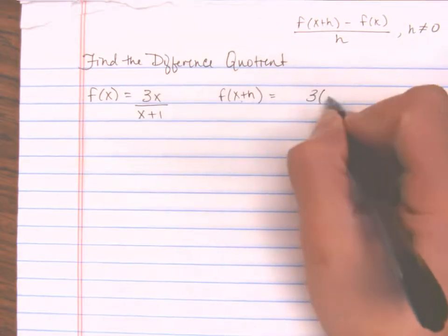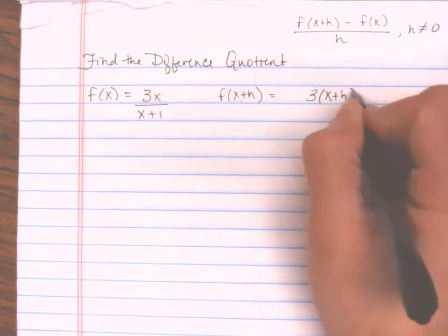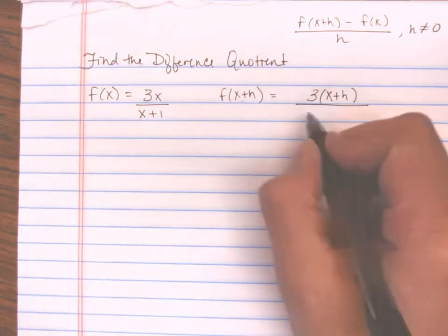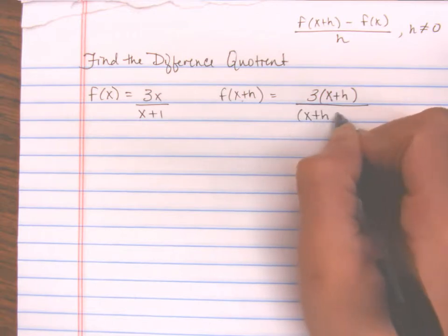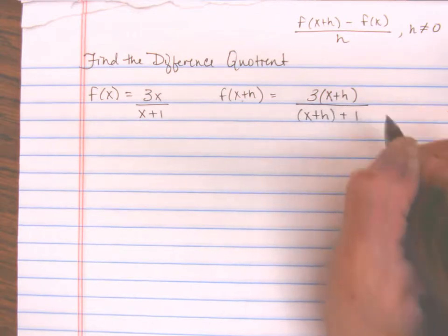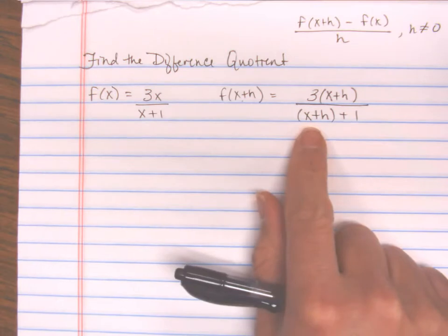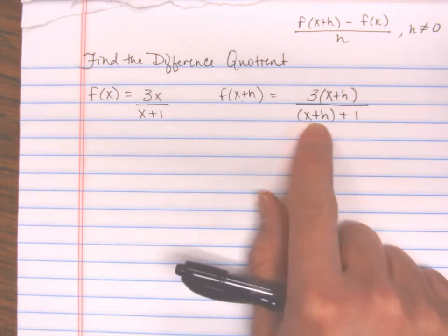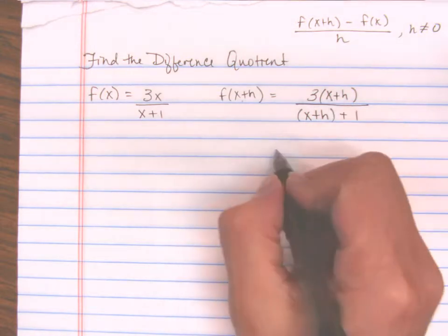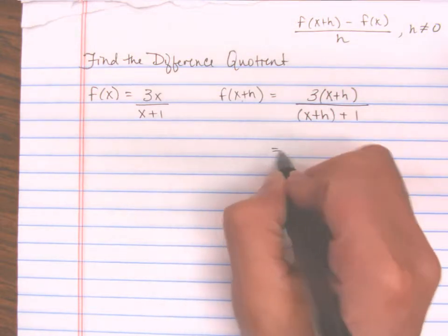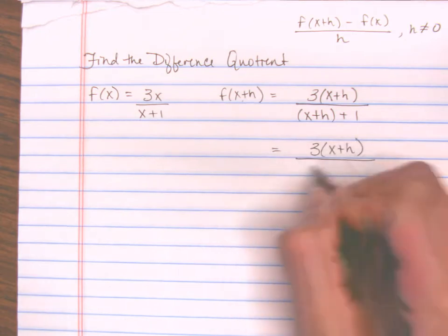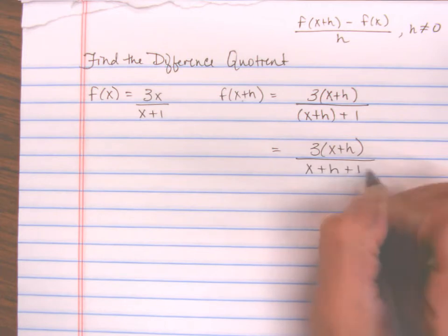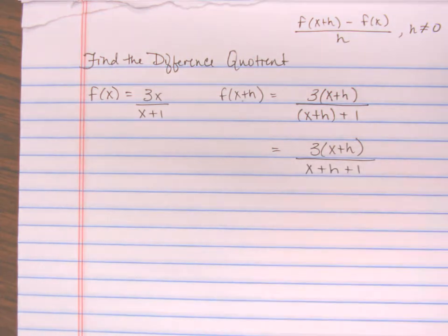So f(x+h) = 3 times (x+h) all over (x+h+1). We're going to call it 3(x+h) in the numerator over x+h+1 in the denominator.